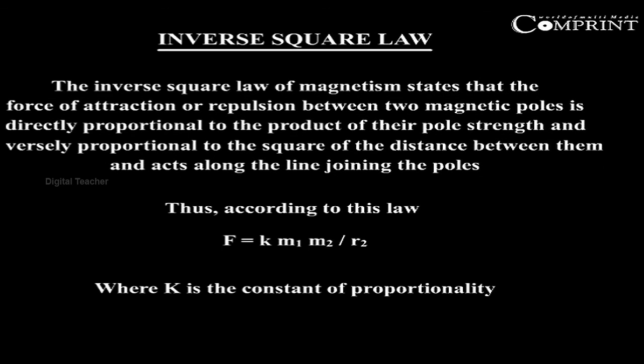Thus, according to this law, F is equal to K M1 M2 by R square, where K is the constant of proportionality.